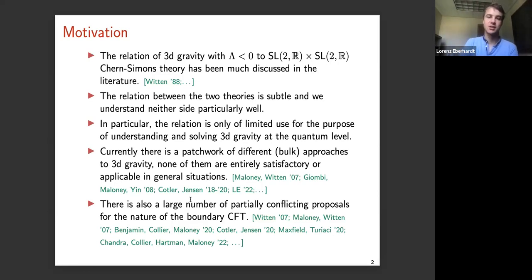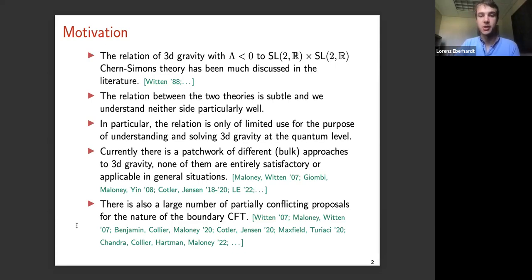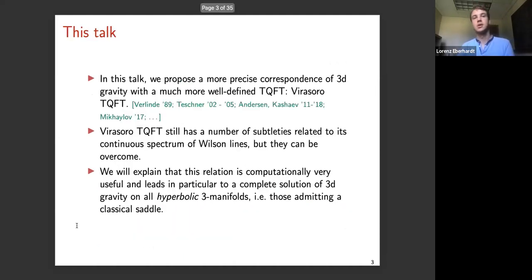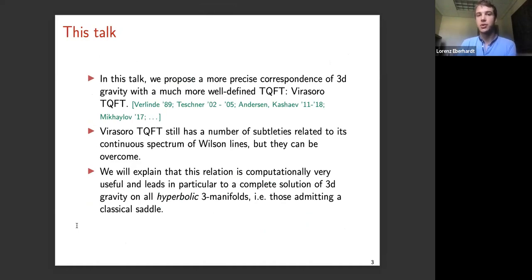Most of those proposals are inspired by recent progress in AdS2, where we have dualities between JT gravity and ensembles of matrix models. The common idea is usually that the boundary CFT is some sort of ensemble-averaged CFT2. But that's not what I'll be talking about. We'll talk about 3D gravity itself and, more precisely, we'll make the correspondence with Chern-Simons theory precise by replacing SL(2,R) Chern-Simons theory with a different TQFT that we'll call the Virasoro TQFT.